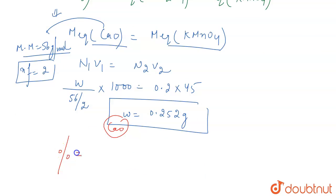To find the percentage of CaO in limestone, that will be 0.252 divided by 0.56, because we are given this much weight of the limestone, times 100.